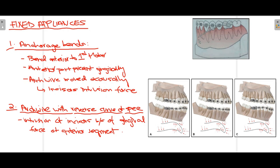The second fixed appliance is the arch wire with reverse curve of Spee. Normally we know the curve of Spee; when reversed with an arch wire, it can treat deep bite. When the curve of Spee is reversed, gingival force is applied anteriorly to the incisor teeth. Over time, the incisors are intruded — comparing before-and-after pictures demonstrates the final results. The purpose is anterior intrusion of incisors.